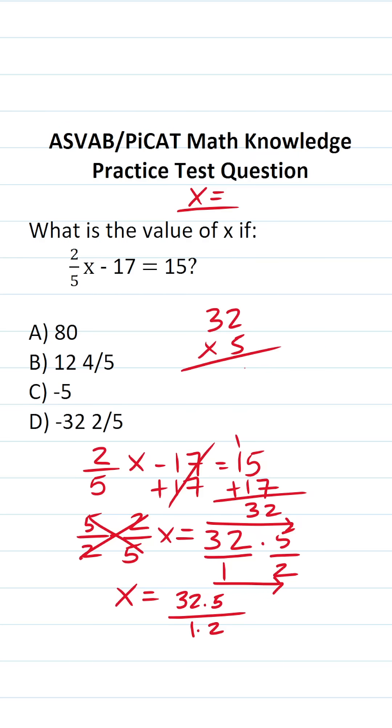32 times 5. 5 times 2 is 10. I carry a 1. 3 times 5 is 15 plus 1 is 16. This becomes 160 over 1 times 2 is 2. What is 16 divided by 2? That's 8. So this is going to be 80. The correct answer to this one is A) 80.